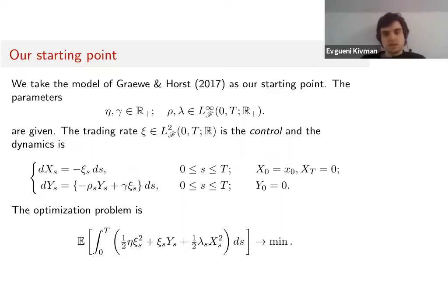The second term is the transient price impact cost. If Y is large, meaning the price deviation between exogenous price and real price is large, and we're trading fast, then we have to pay high costs.